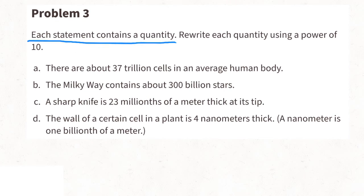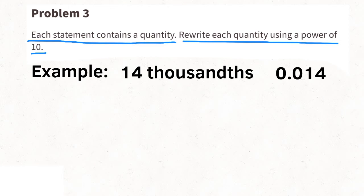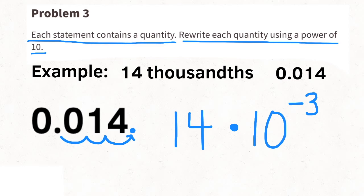Problem number three: each statement contains a quantity; rewrite each quantity using a power of ten. For example, fourteen thousandths is written as 0.014. We can rewrite that by moving the decimal point all the way right to get 14, and express it as 14 times 10 to the power of negative 3. In scientific notation, we put the decimal between the one and the four and write 1.4 times 10 to the power of negative 2.